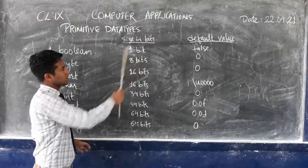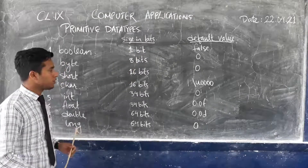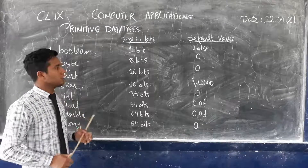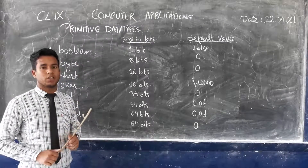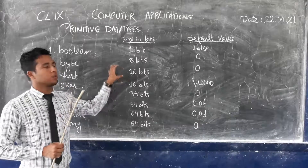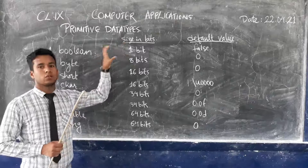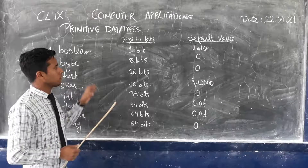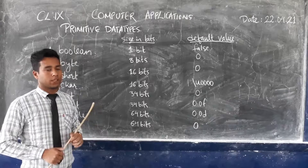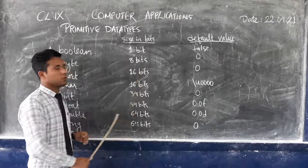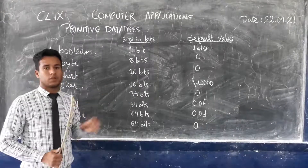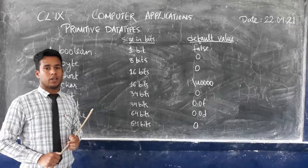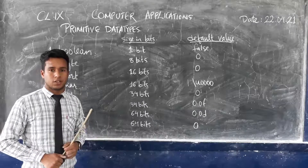In today's class I have explained the eight different types of primitive data types provided by Java. Kindly watch this video properly and refer to whatever is mentioned in your textbook for this topic. If you have any doubts, you can call me or leave a message in the group. Stay safe and please dedicate your time for studies. Thank you.